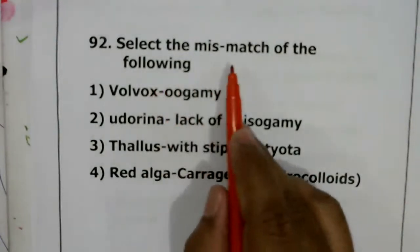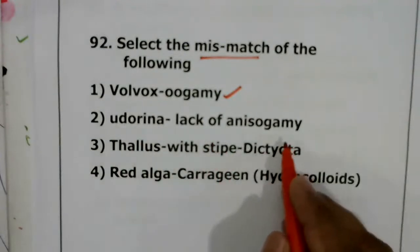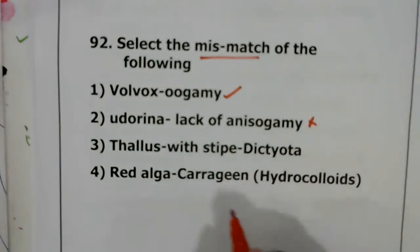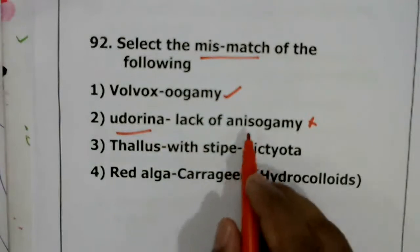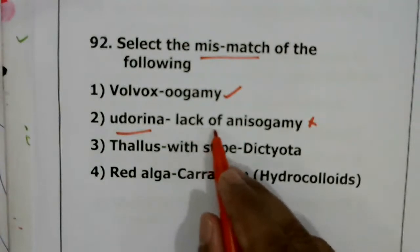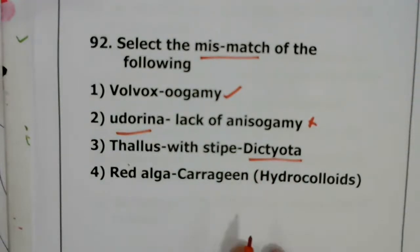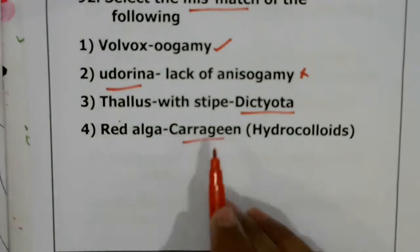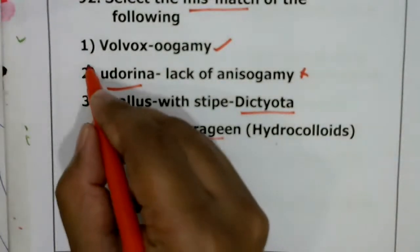Question 92: select the mismatch. Oogamy type of reproduction in Volvox — yes, that is correct. Eudorina lacks anisogamy — this is wrong. Eudorina is a type of green algae, and in Eudorina you get anisogamy, where the male gamete is small and the female gamete is large. The option says 'lack' meaning absent, so it is wrong. Thallus with stripes in Dictyota is correct. The answer for question 92 is the second option.